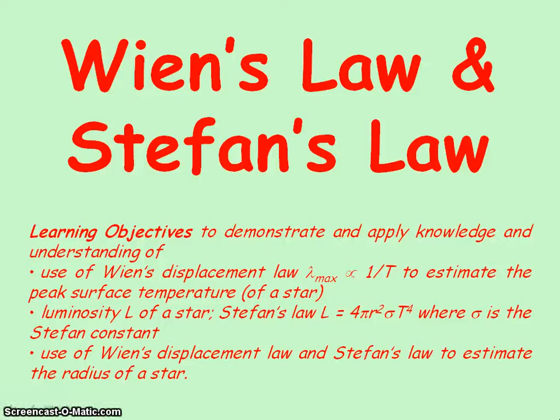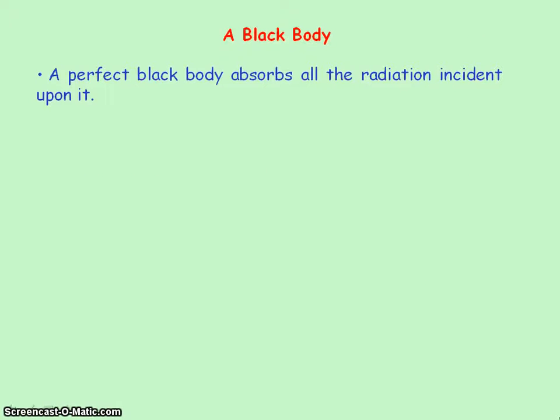We're going to be looking at Wien's law and Stefan's law. In order to understand these laws, we need to know what a black body is. A perfect black body absorbs all the radiation incident upon it.